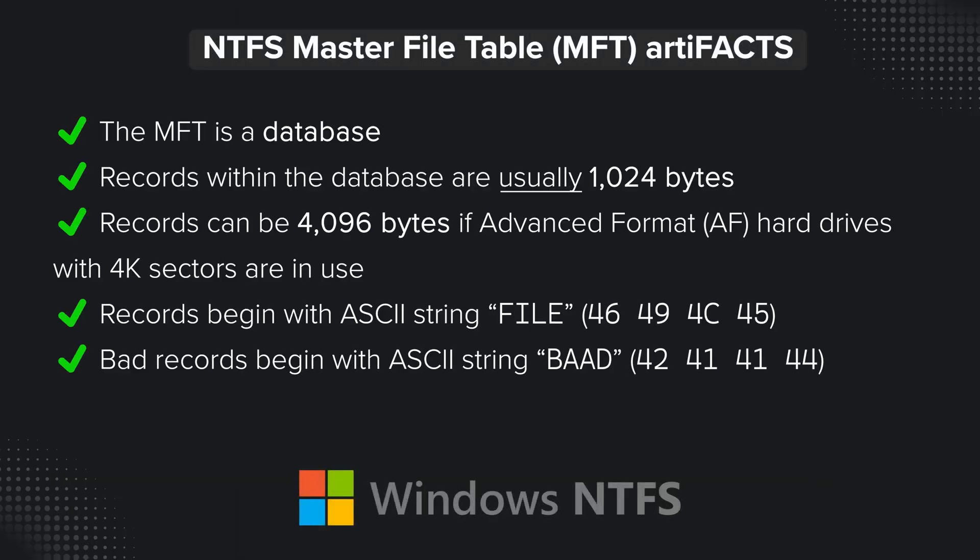For all intents and purposes, the MFT is a database. The records within the database are usually 1024 bytes long, but can occasionally be 4096 bytes long for Advanced Format (AF) drives with 4K sectors. Records begin with the ASCII string 'FILE' — hex 46 49 4C 45 — though a record with an error would begin with 'BAAD', hex 42 41 41 44.